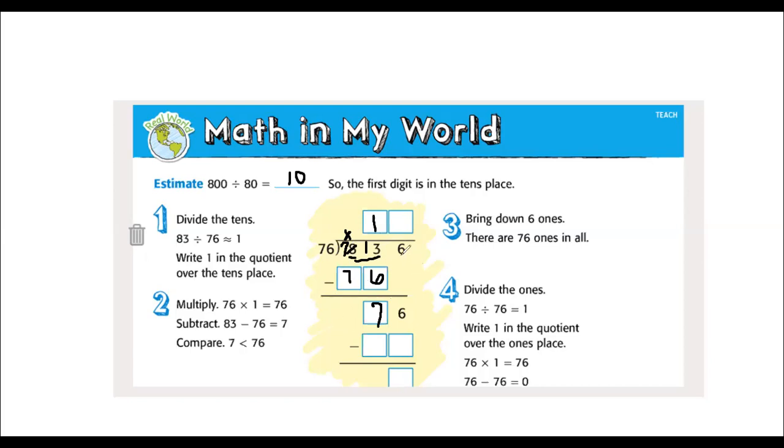So now we have 13 minus 6 equals 7 and 7 minus 7 is 0. We're not going to write that down, that's going to be invisible. We're going to bring down the 6 from the ones place. Now we're showing 76 divided by 76 which equals 1. 1 times 76 is 76. 76 minus 76 is 0. We use the inverse operation and multiplication to check our answer.